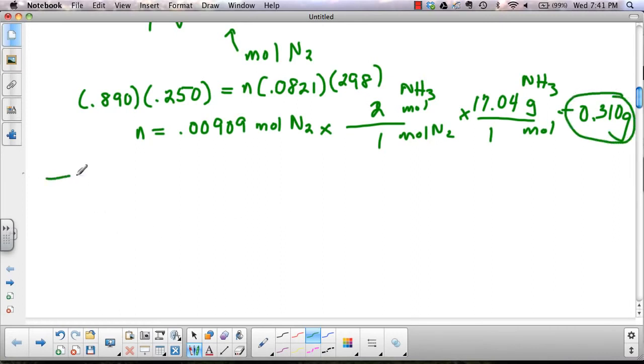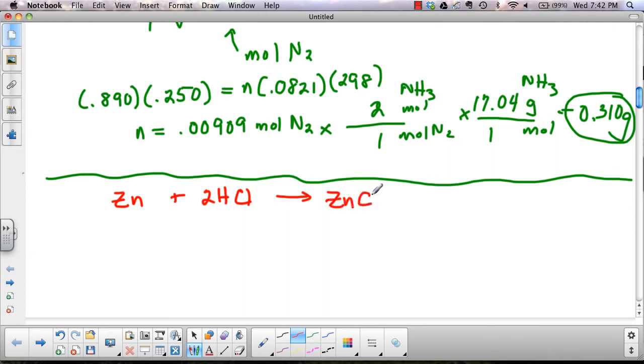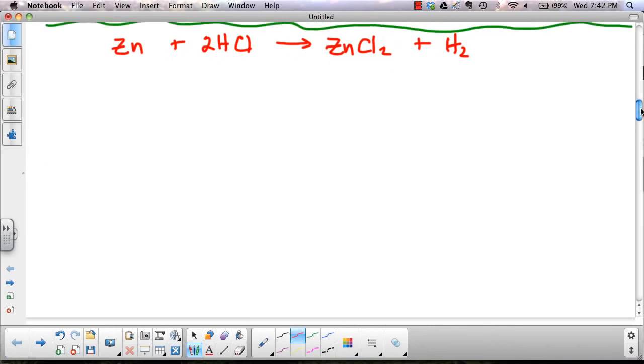Let's do one more. Let's pick zinc and have it react with hydrochloric acid to make a single replacement reaction. So zinc chloride and hydrogen gas. And the only twist that I'm going to add to this one is we're going to collect our hydrogen gas over water. So remember, there's an extra step there.